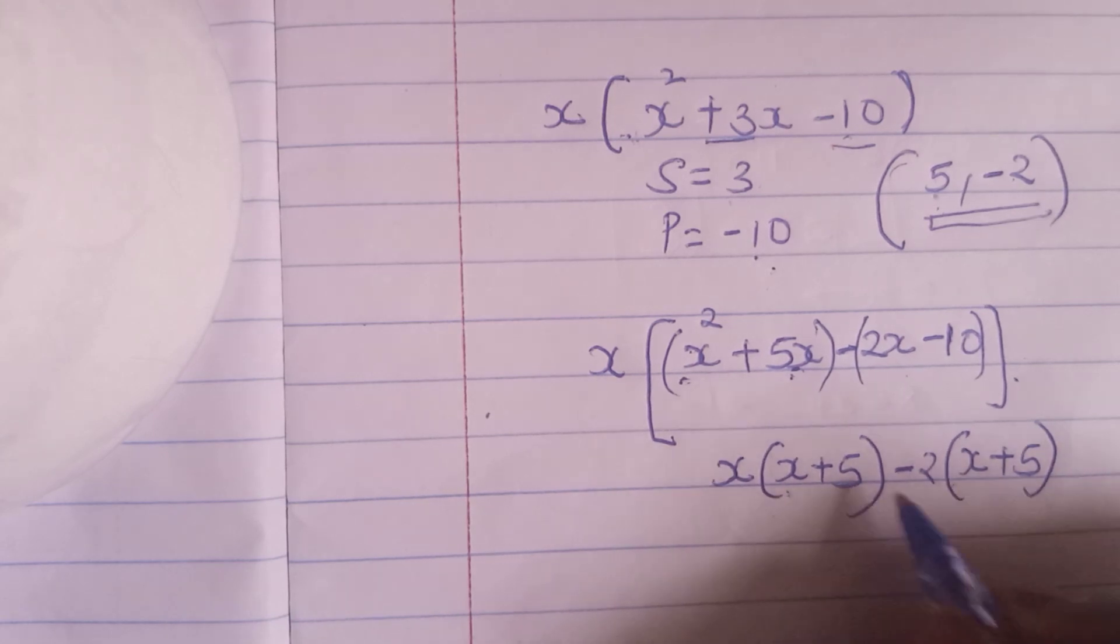So this is what I've factored out. x plus 5 is common. We have it on this side and this side. So I will pick one, x plus 5, into bracket and pick what is left outside the bracket, x minus 2. So this is what is left outside the bracket, x minus 2. And I have now factorized it.